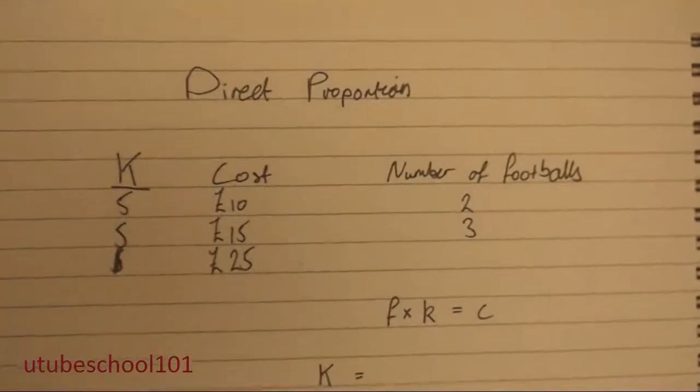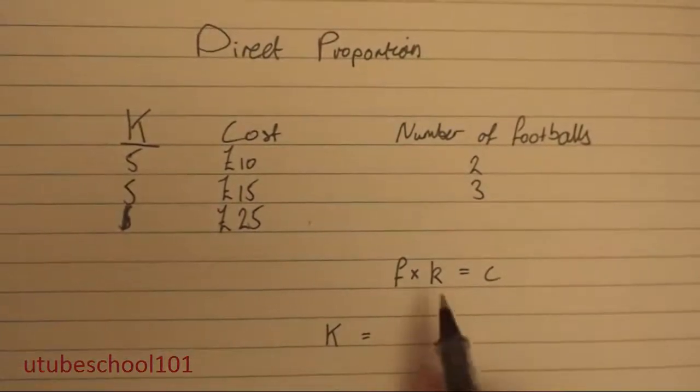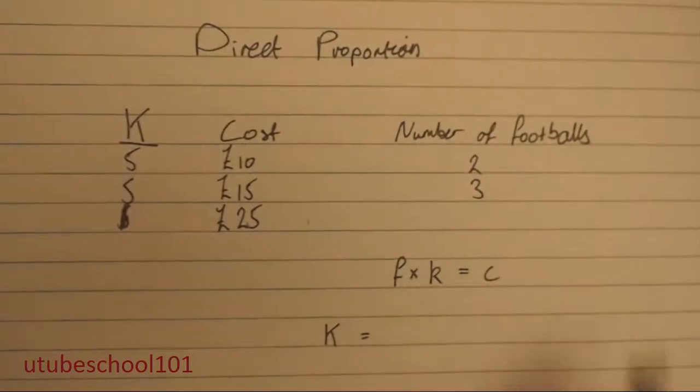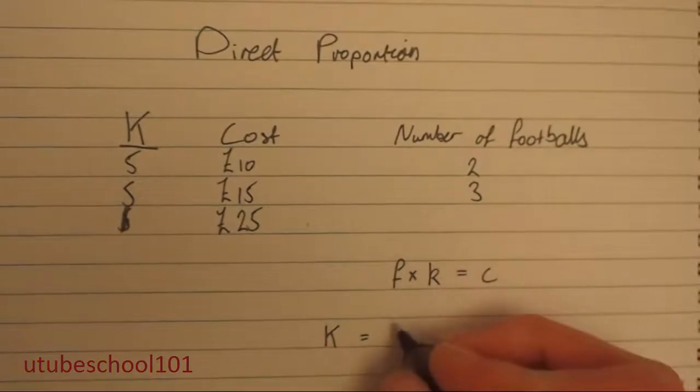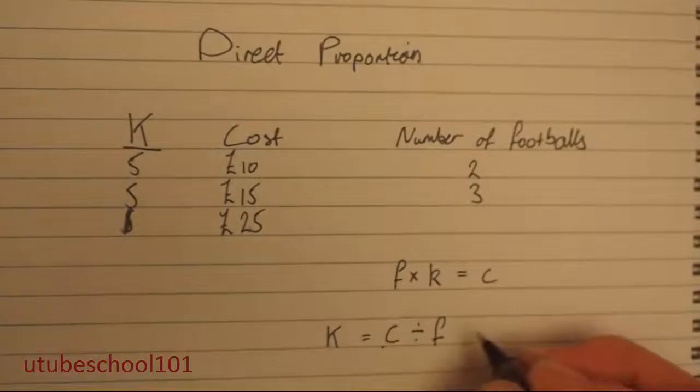If you've used algebra before, you'll understand this. And to get k on its own, I have to divide by f. And I have to do the same to both sides. So you have to do c divided by f.